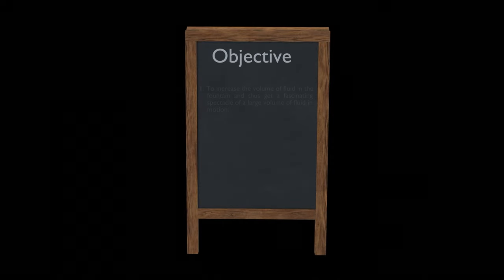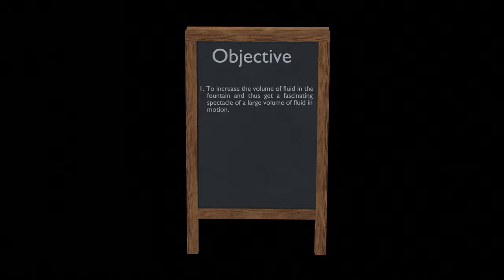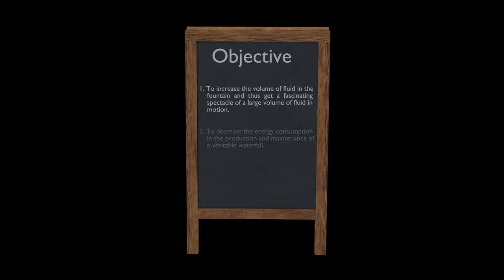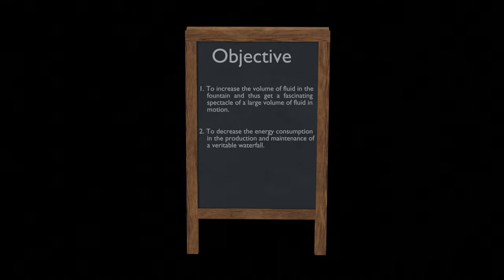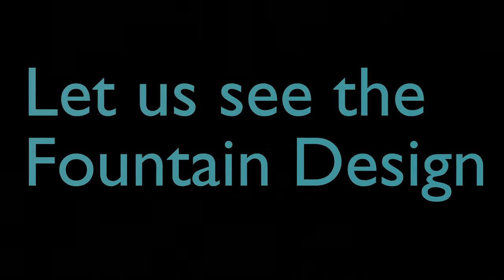The objectives of his design were: to increase the volume of fluid in the fountain and thus get a fascinating spectacle of a large volume of fluid in motion; and to decrease the energy consumption in the production and maintenance of a veritable waterfall. So let us discuss the fountain designed by Nikola Tesla.